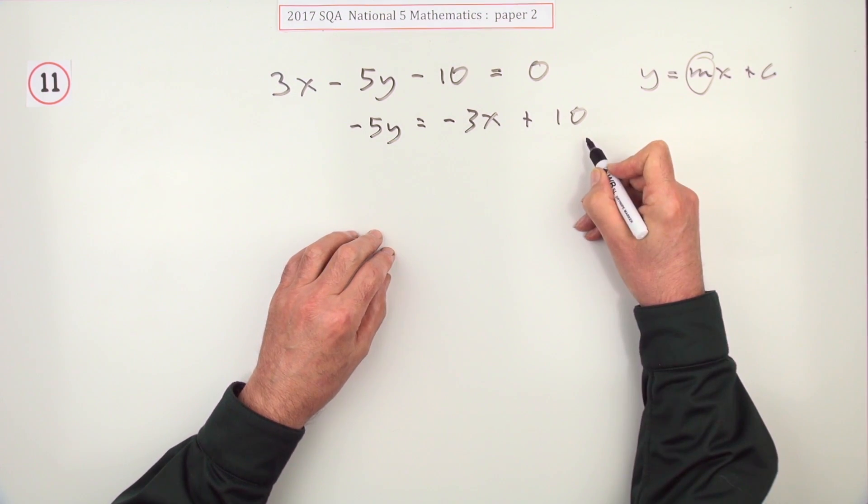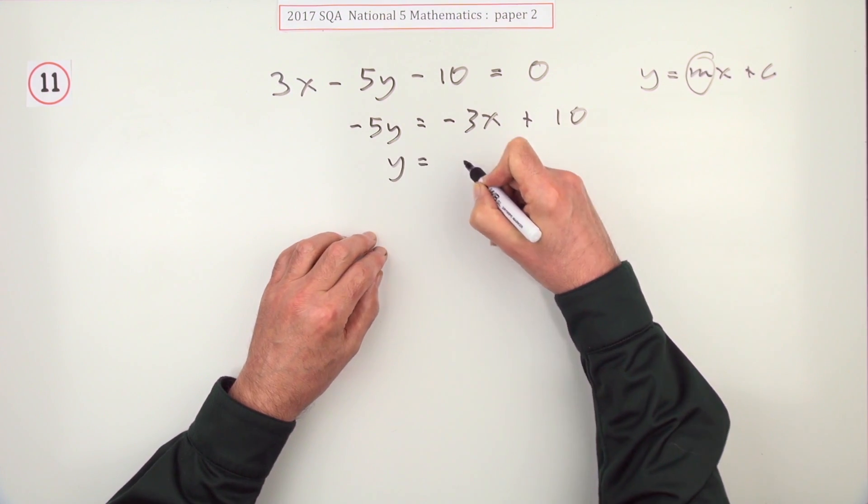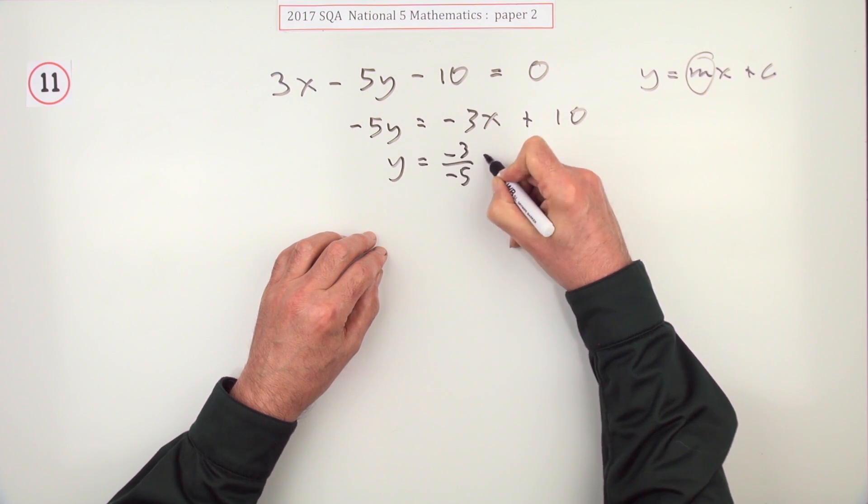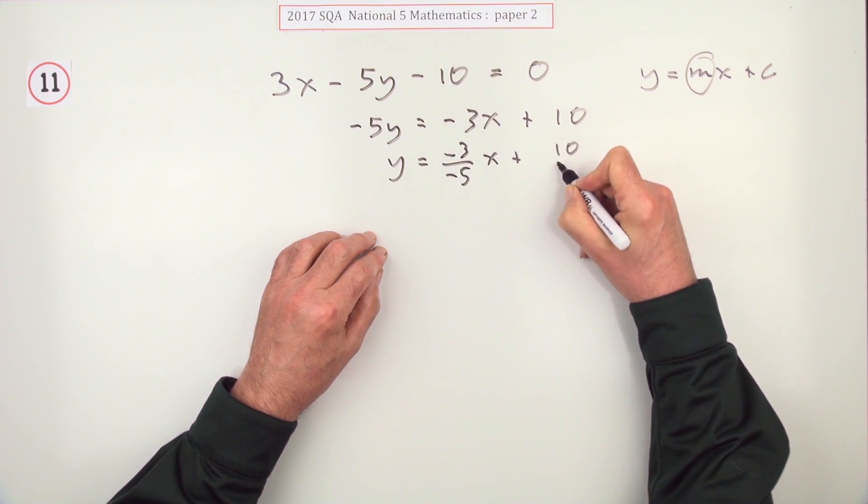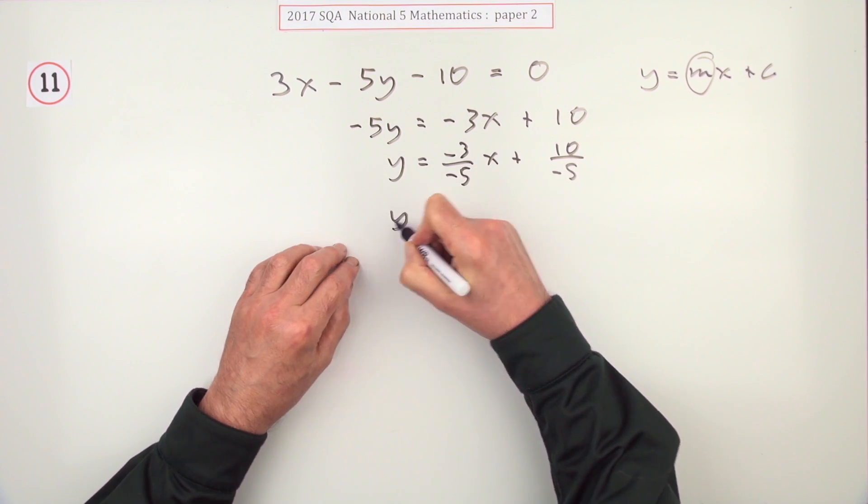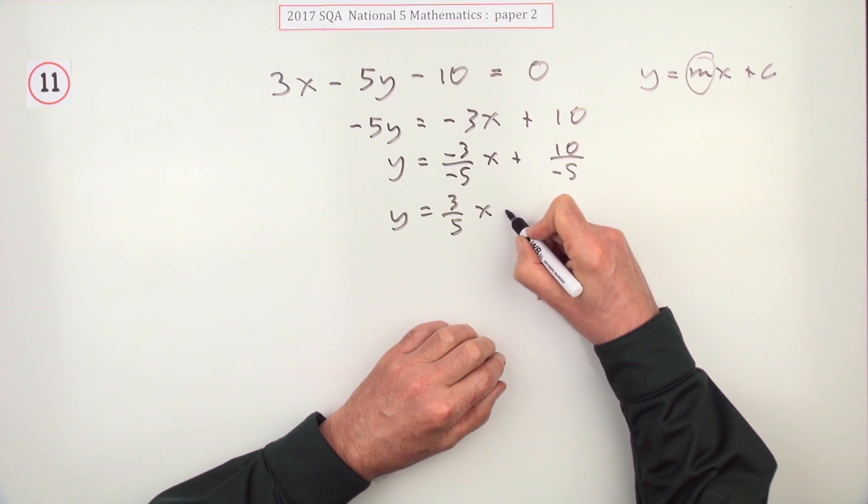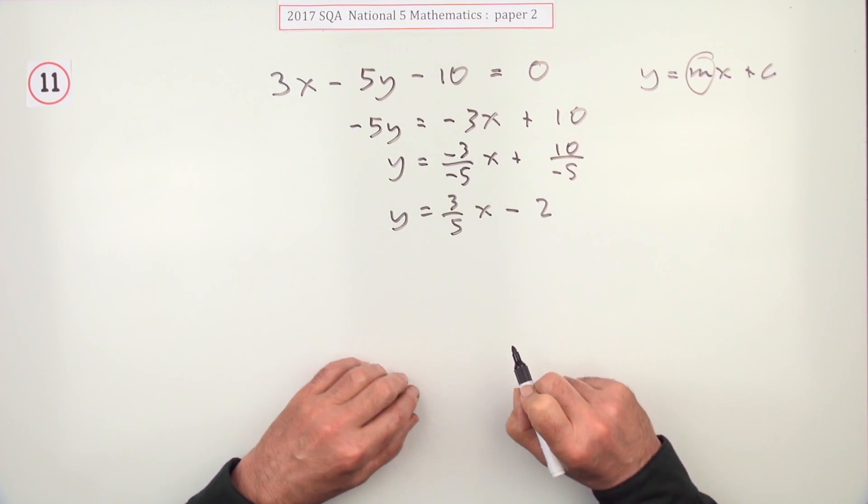Now you could flip the signs or you can just say divide by negative 5. So you've got negative 3 over negative 5. I'll put it down. You've got negative 3 over negative 5. You've got 10 over negative 5. So you've got 3 fifths of x because the negative divided by negative is positive. And that comes to minus 2.